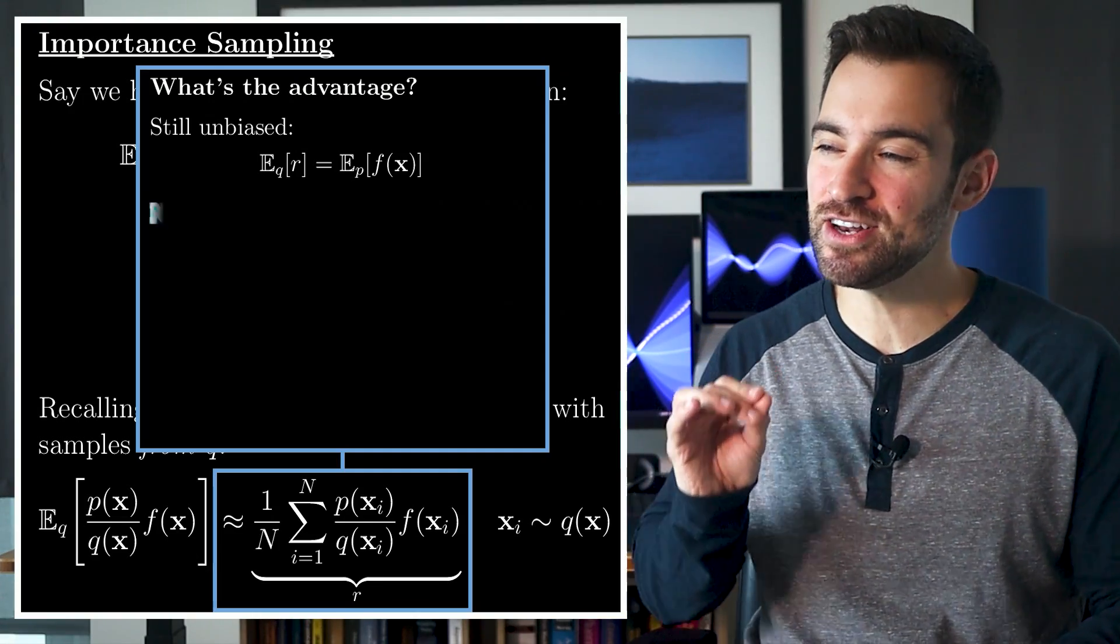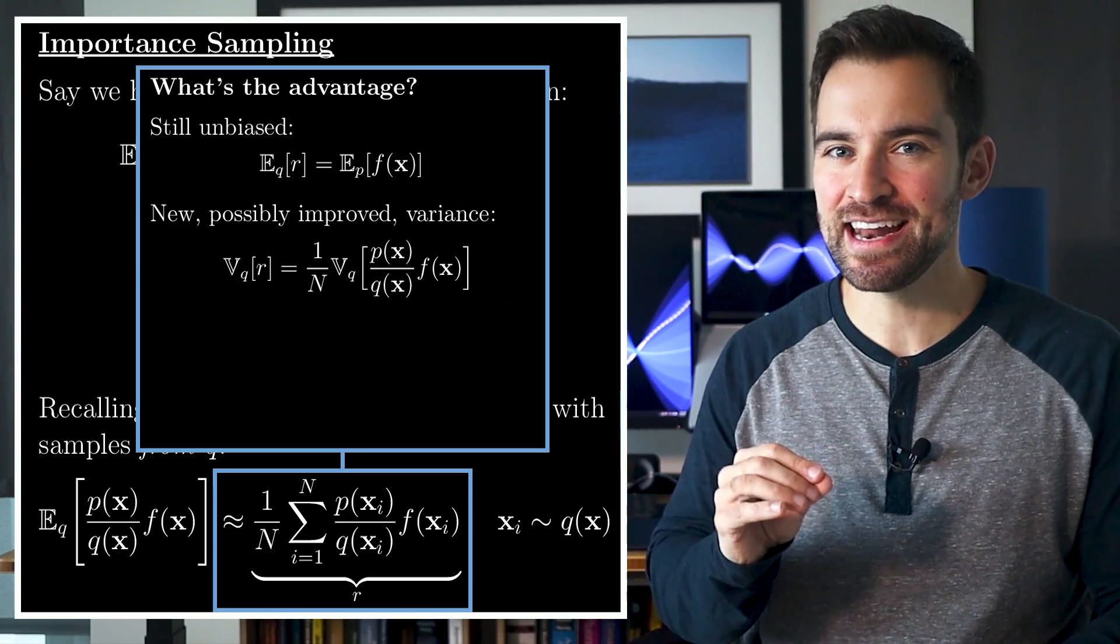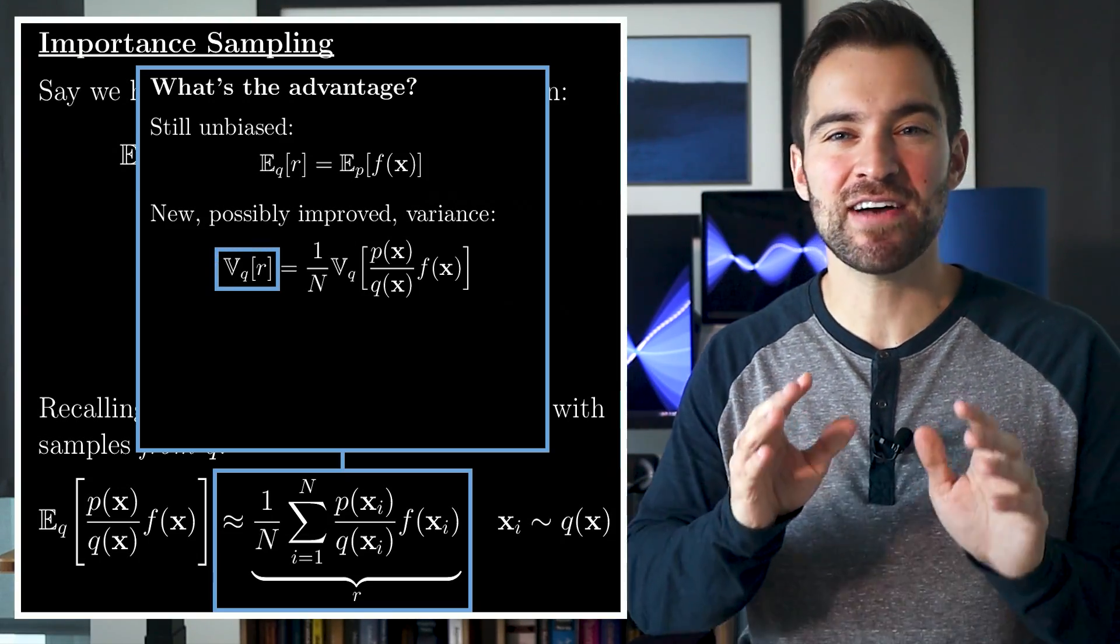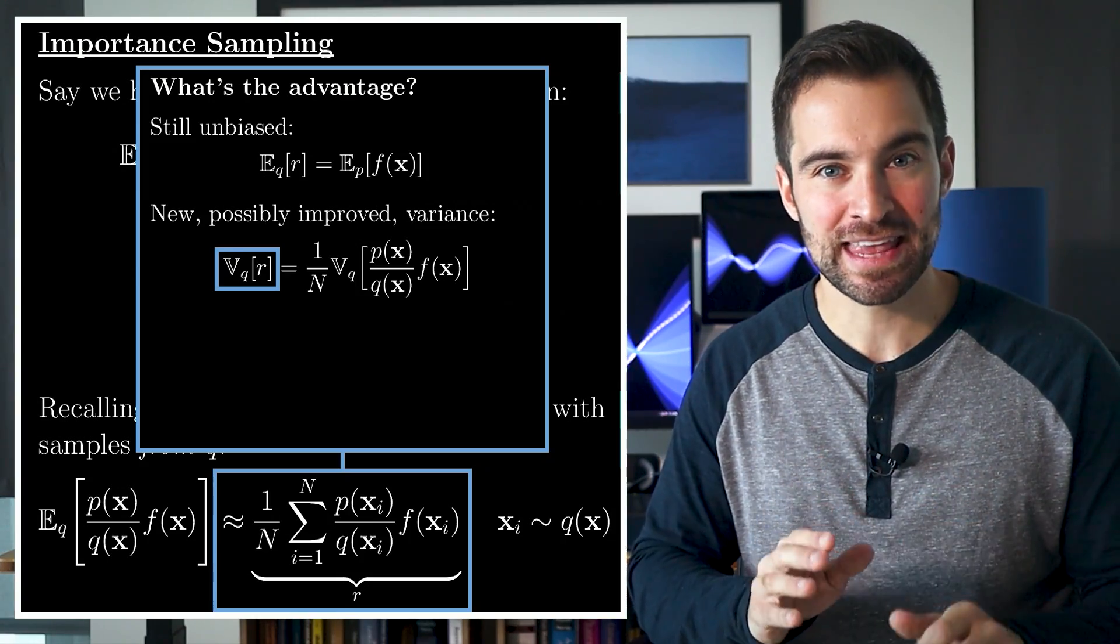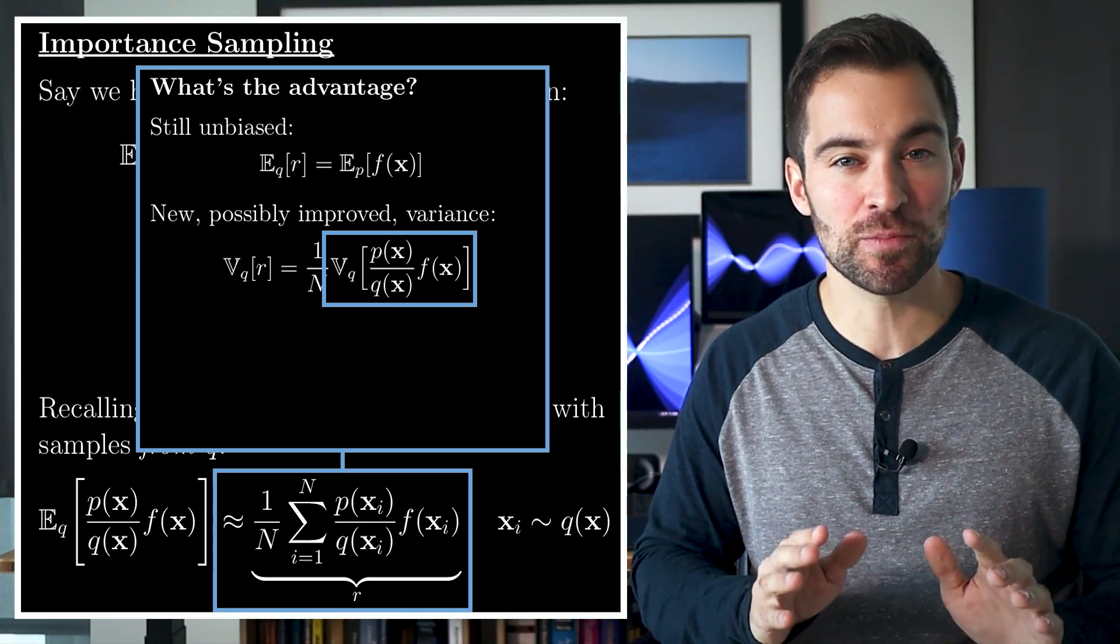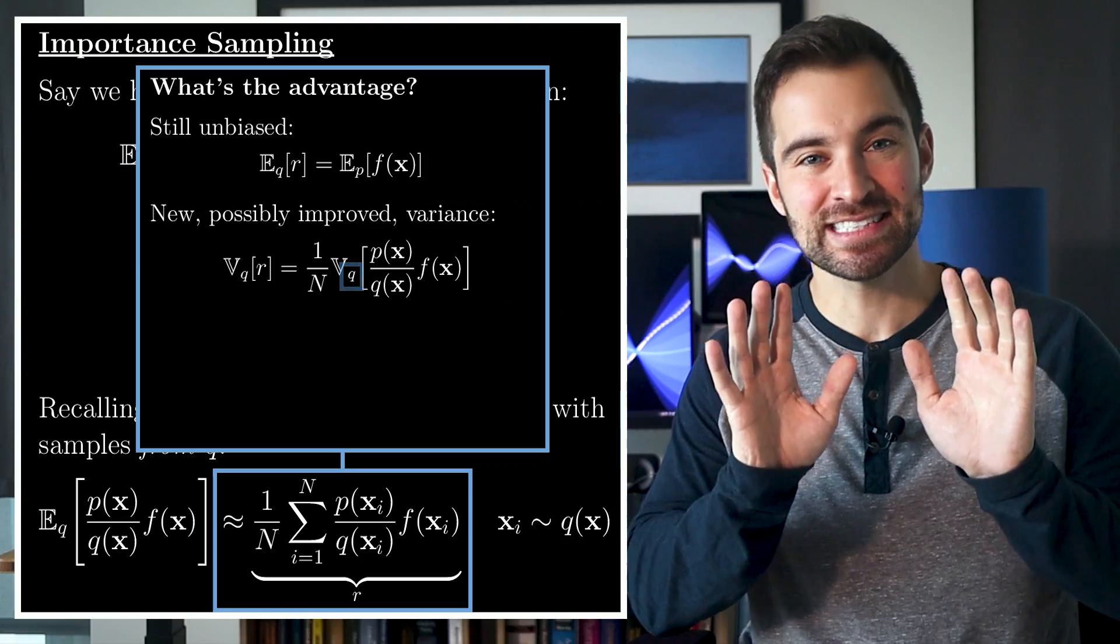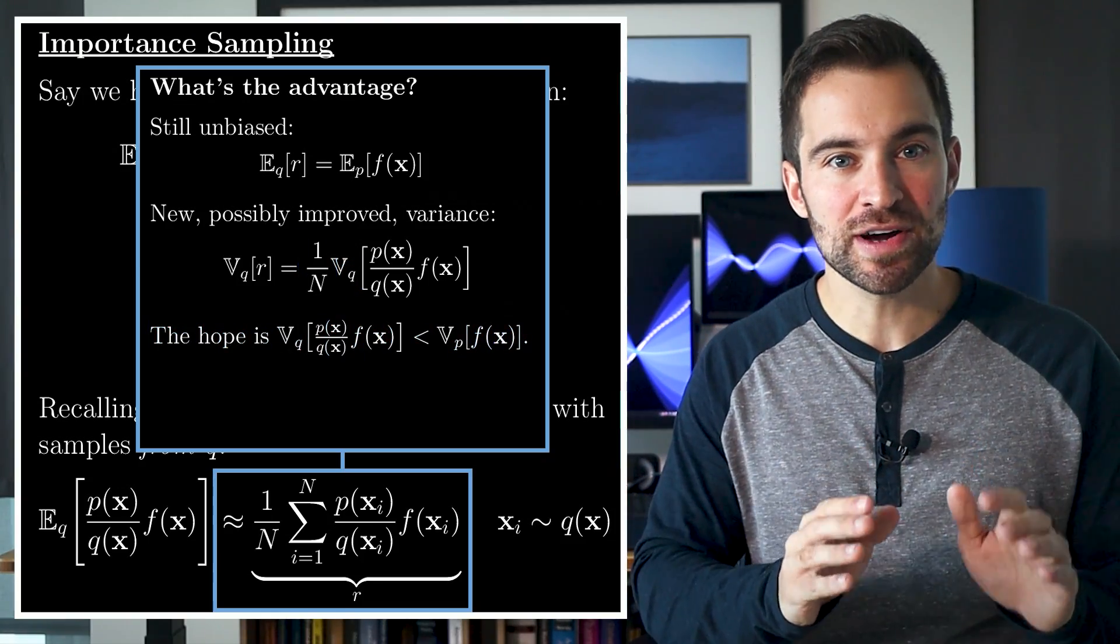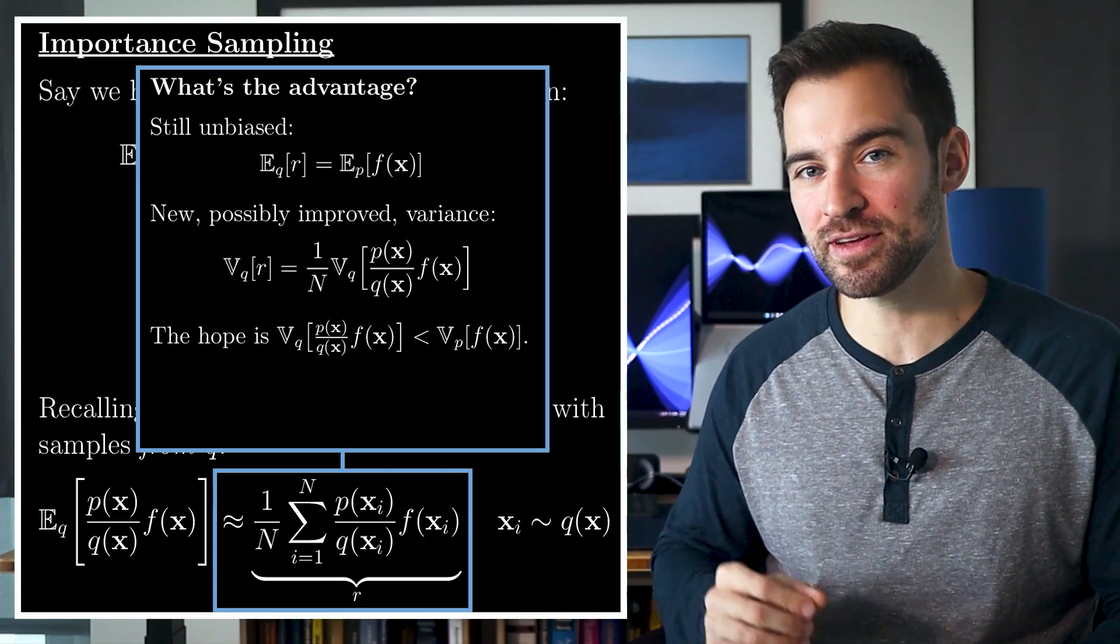And second, it has a new, possibly improved variance. That is, the variance of r, which gives us a sense of how off from the truth a single sample of r is likely to be, is the variance of f times the density ratio where samples are generated according to q, scaled down by m. So, the hope is we can choose q such that this variance is less than the variance we dealt with earlier.